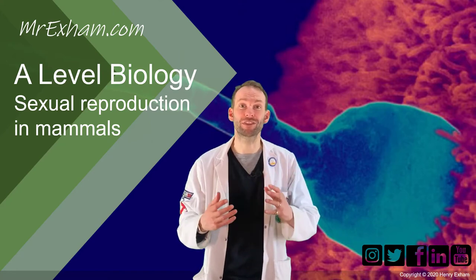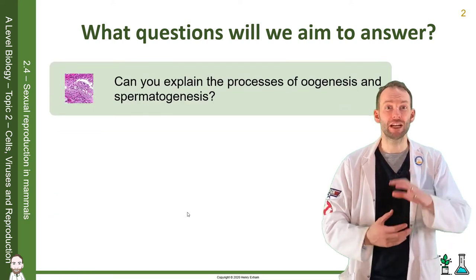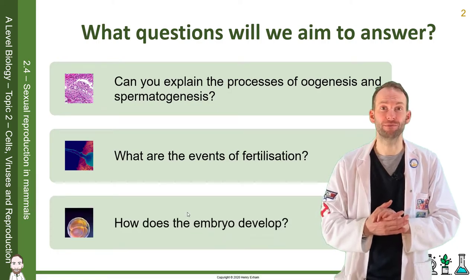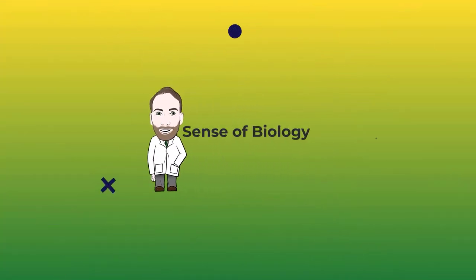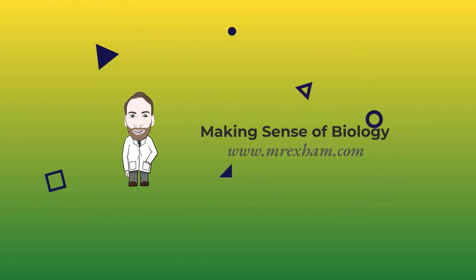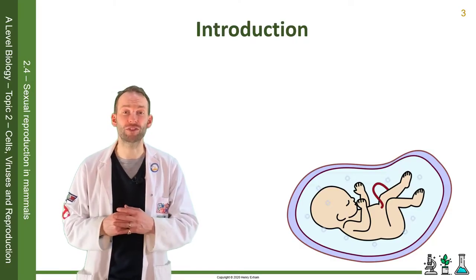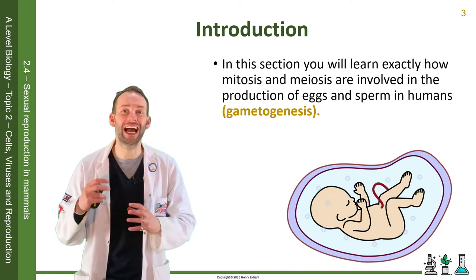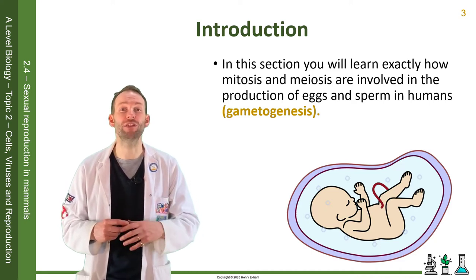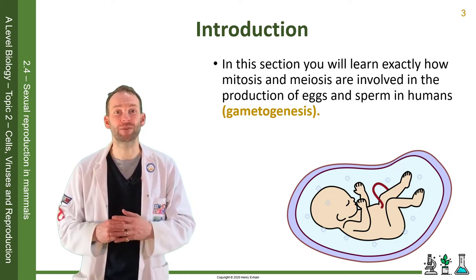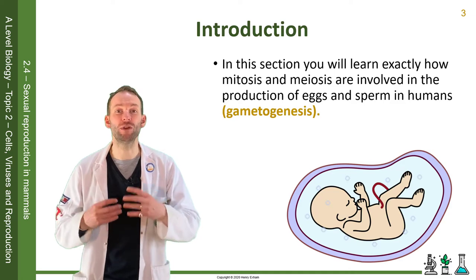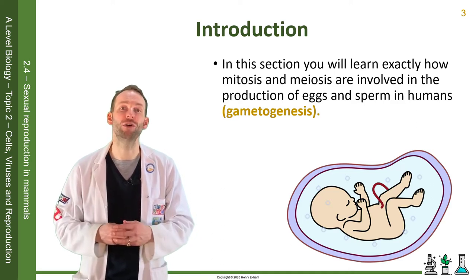In this lesson, we're going to learn about the process of oogenesis and spermatogenesis, the events of fertilization, and early embryo development. We've previously learned about the two types of cell division, mitosis and meiosis, and here we'll see exactly how both are involved in the production of eggs and sperm in humans in the process of gametogenesis. We'll also consider what happens when these two gametes meet in the fallopian tube, fuse, become a zygote, and then grow into an embryo.